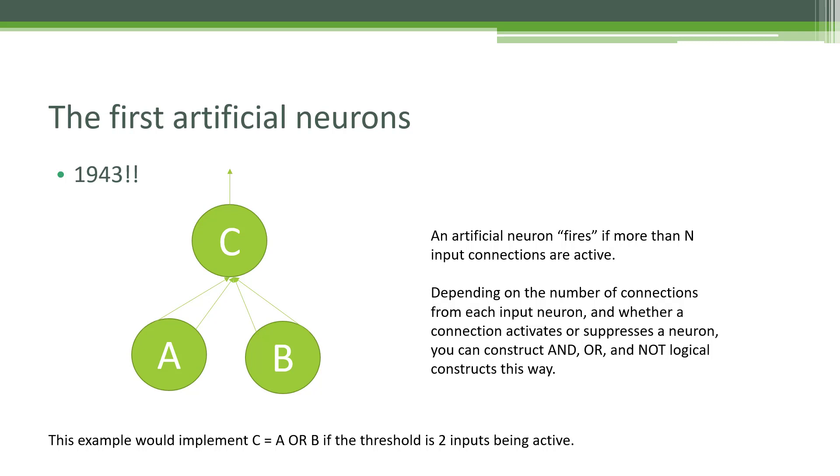This particular diagram is implementing an OR operation. Imagine that our threshold for our neuron was that if you have two or more inputs active, you will in turn fire off a signal. In this setup we have two connections to neuron A and two connections coming in from neuron B. If either of those neurons produce an input signal, that will cause neuron C to fire. We've implemented the Boolean operation C equals A or B. It's also possible to implement AND and NOT in similar means.